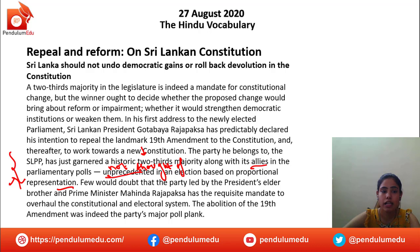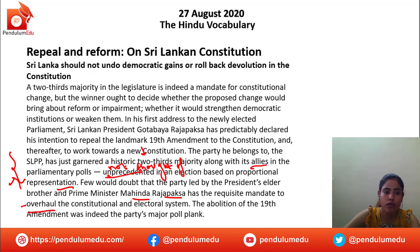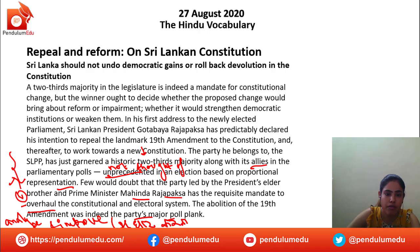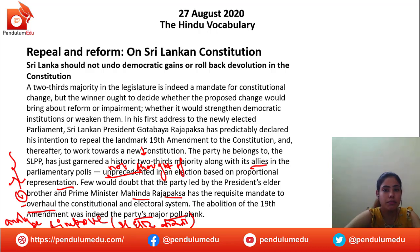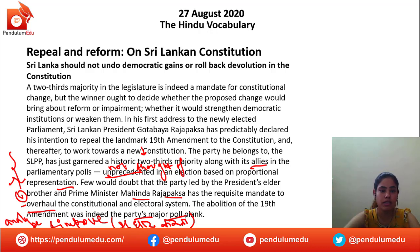Fewer doubt that the party led by the president's elder brother and Prime Minister Mahinda Rajapaksa has the requisite mandate to overhaul the constitutional and electoral system. Overhaul is a verb which means to analyze and improve. People note that with a two-thirds majority, it is quite possible that his brother who is Prime Minister may have helped him gain control over this electoral system.